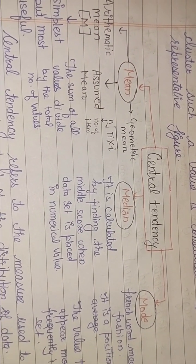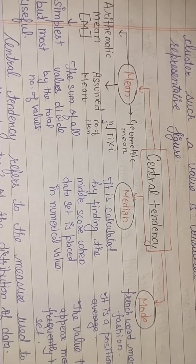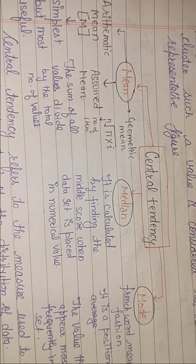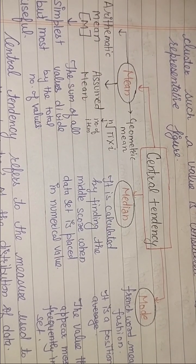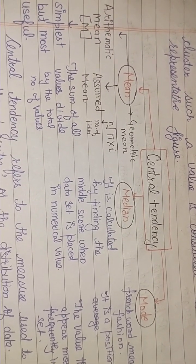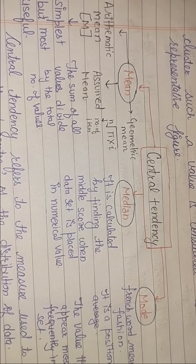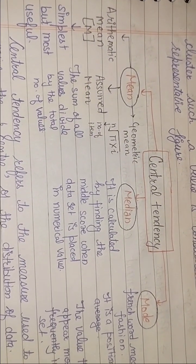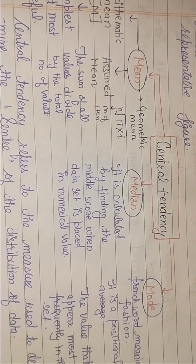That is mean, median and mode. Mean kya hota hai - aapke paas jitni bhi values di hai, unhe total number se divide kar do, and then you will get the central tendency. To ye three types ka hota hai: arithmetic, assumed, or geometric. Simplest form hai but sabse zyada important form bhi hai, ye sabse zyada useful bhi hai.